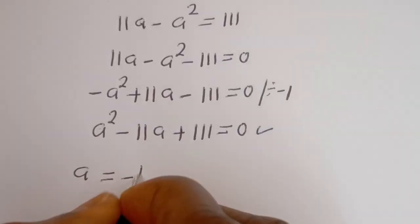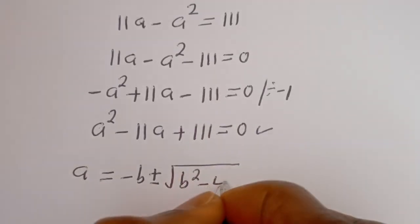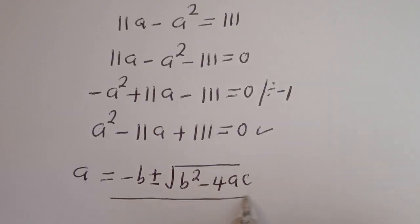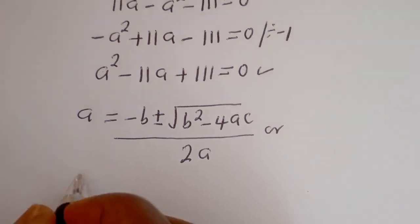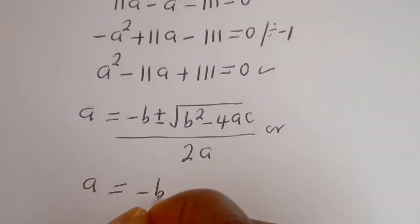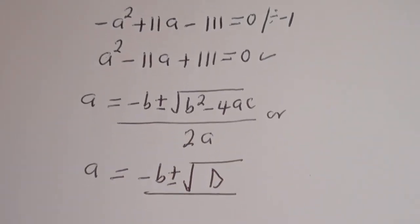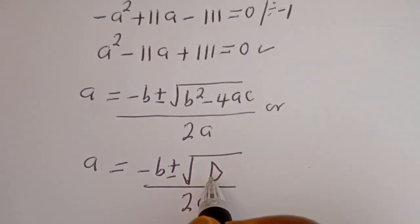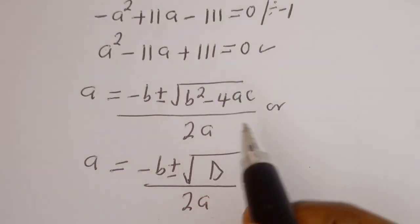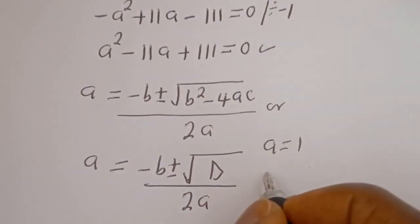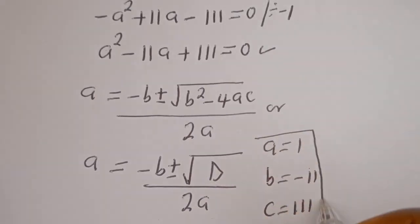The quadratic formula is: A equals minus B plus or minus square root of (B squared minus 4AC) over 2A. From our equation A squared minus 11A plus 111 equals 0, the coefficients are: A equals 1, B equals minus 11, and C equals 111.